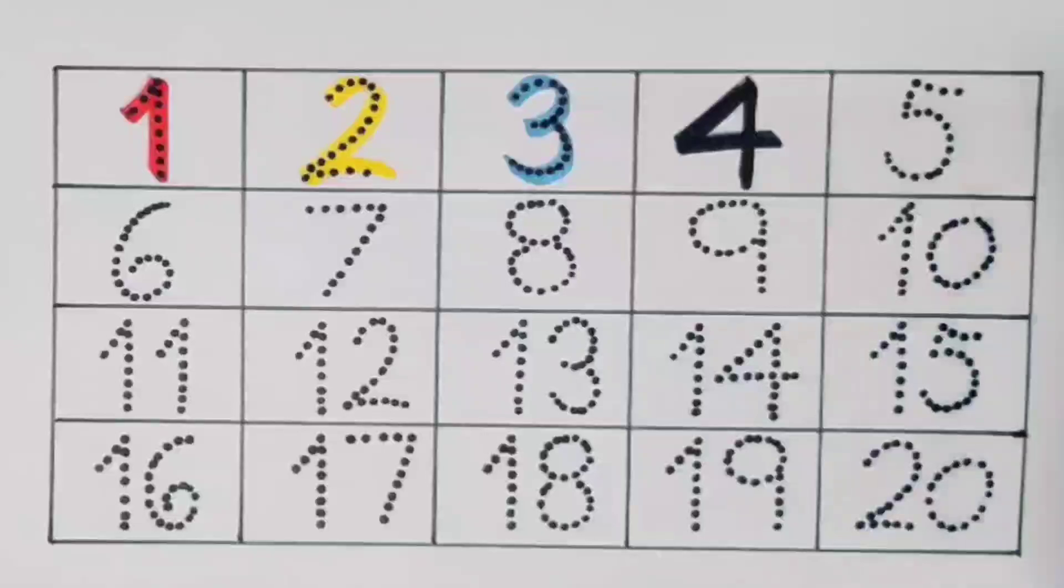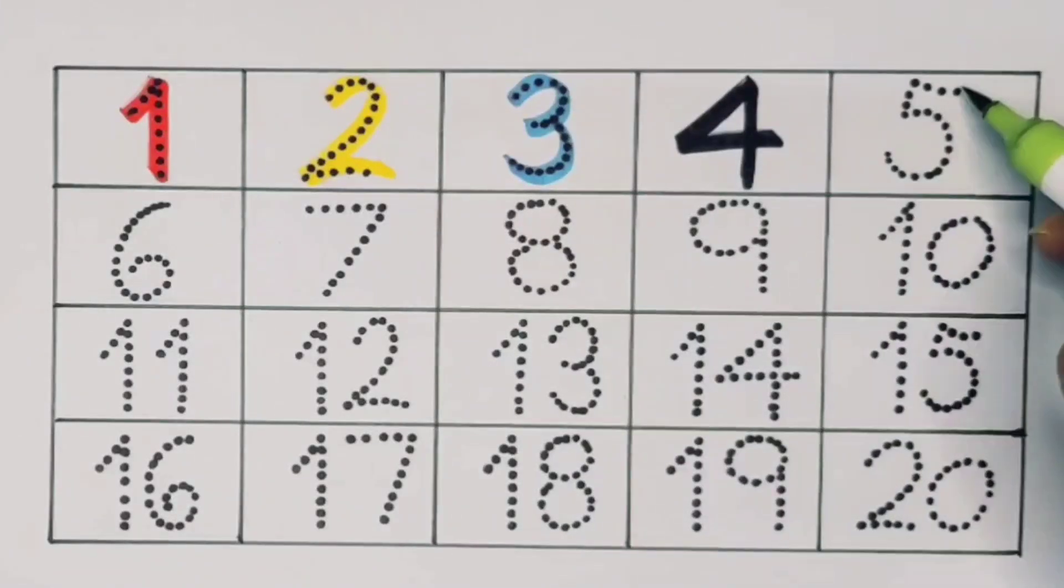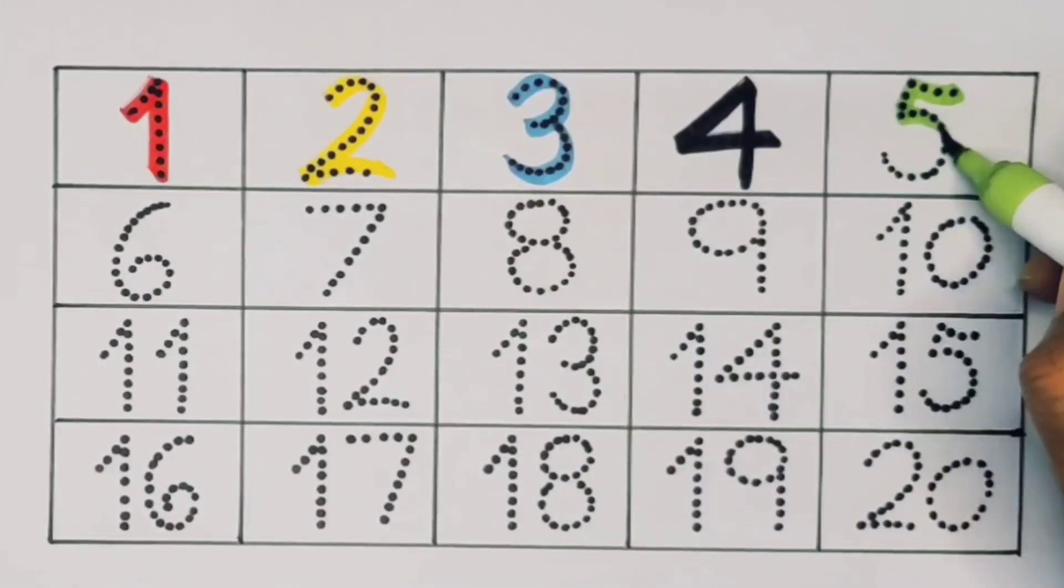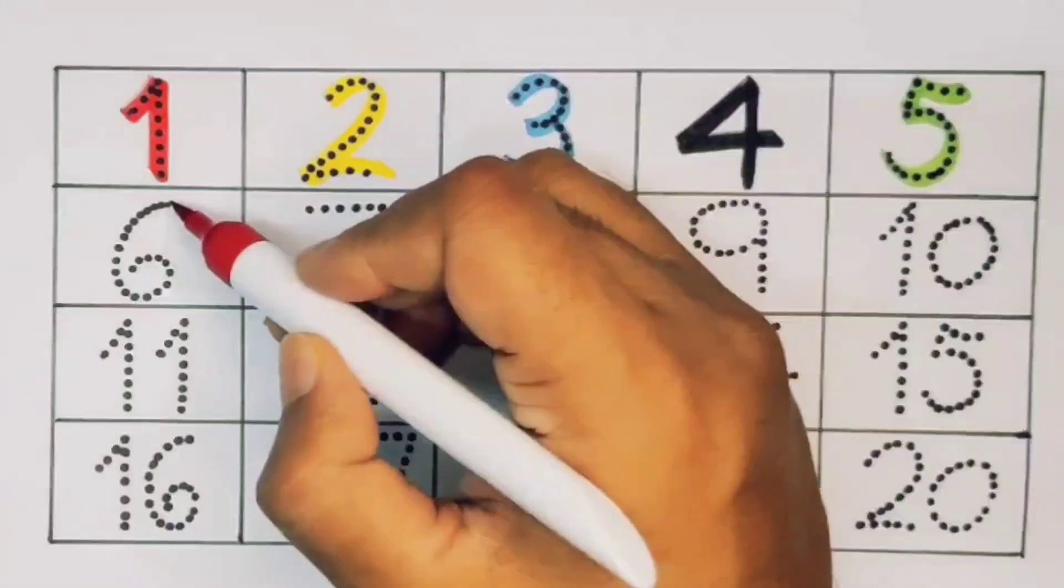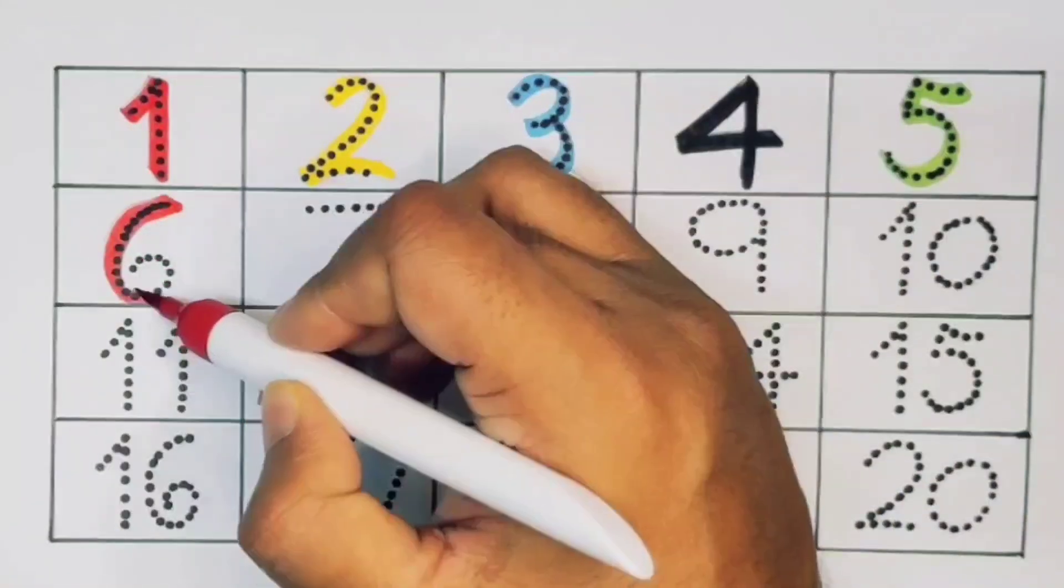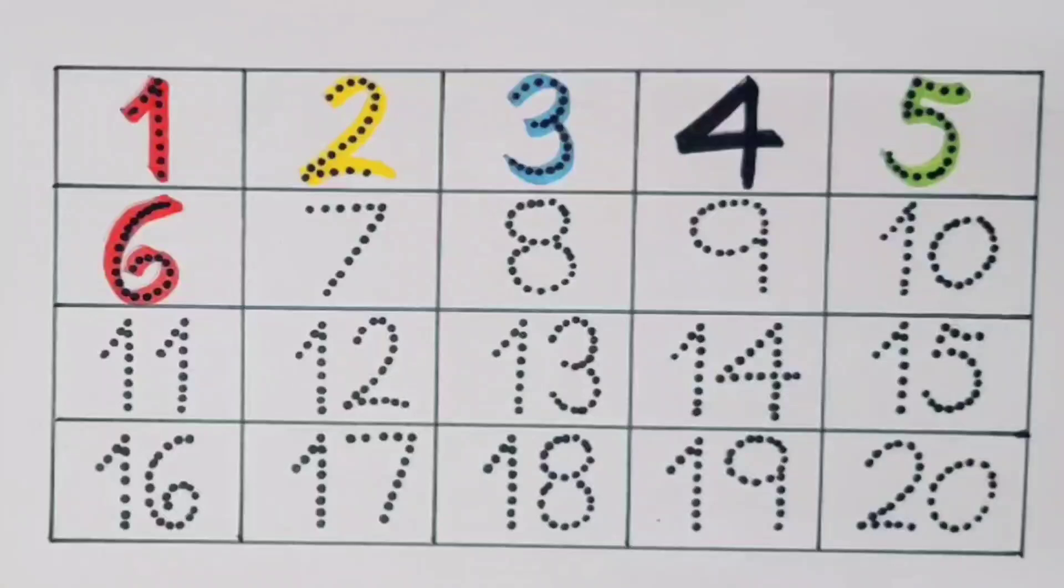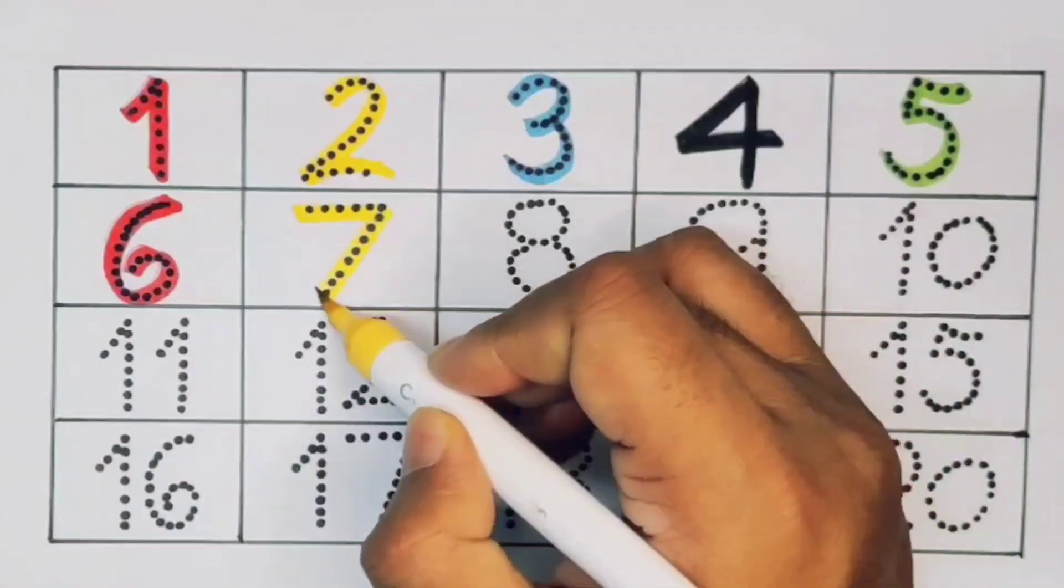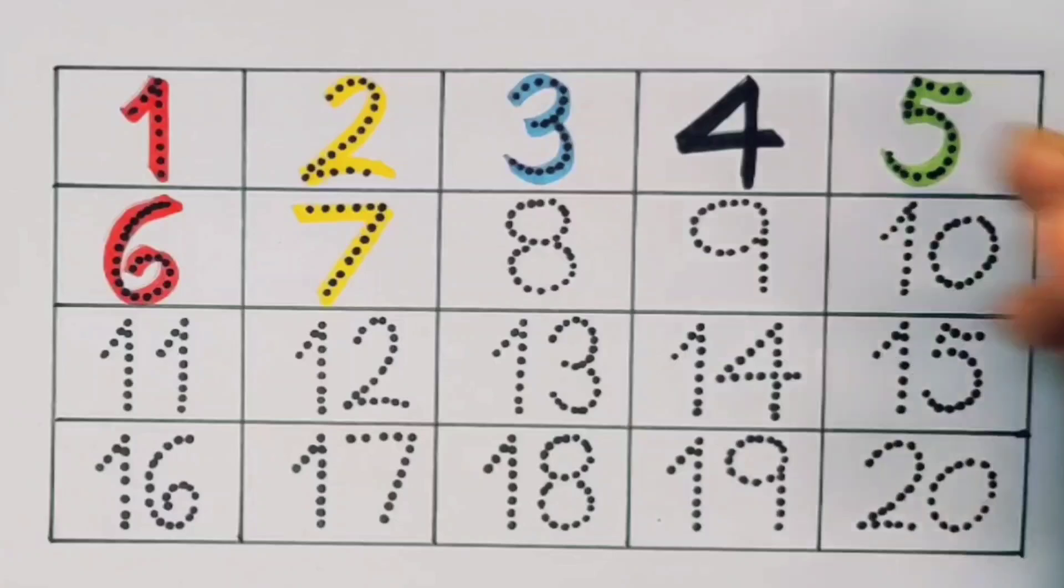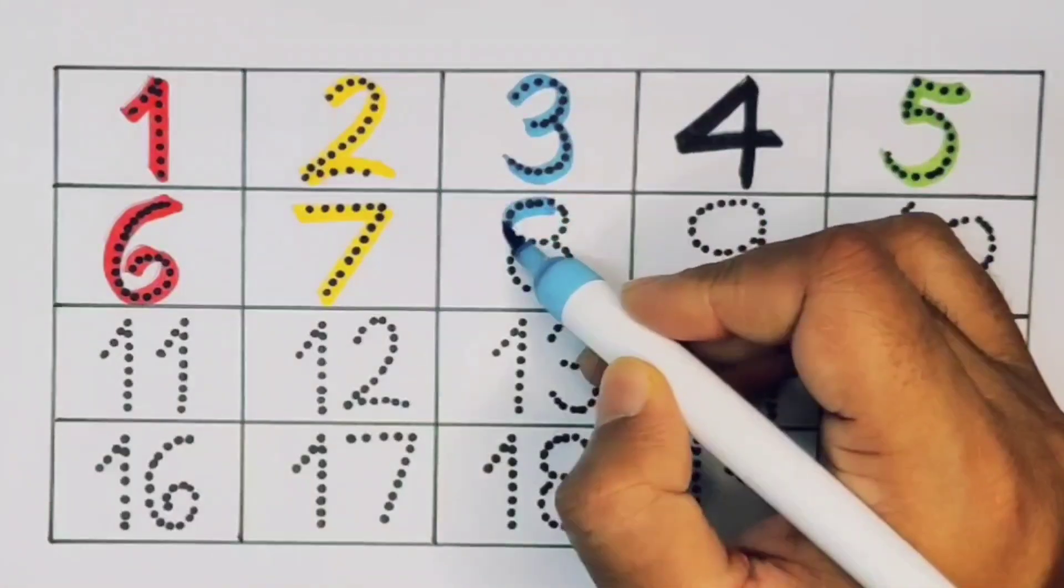Next kids, five. Number five. Next kids, six. Number six. Next, seven. Number seven. Next kids, eight. Number eight.